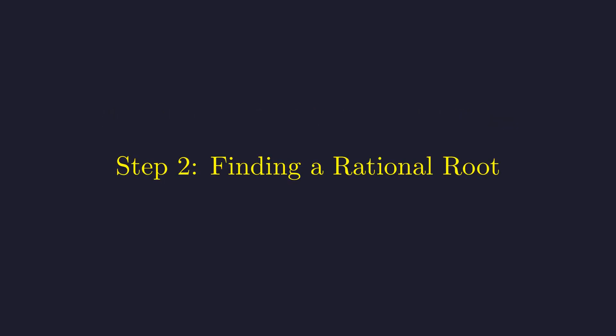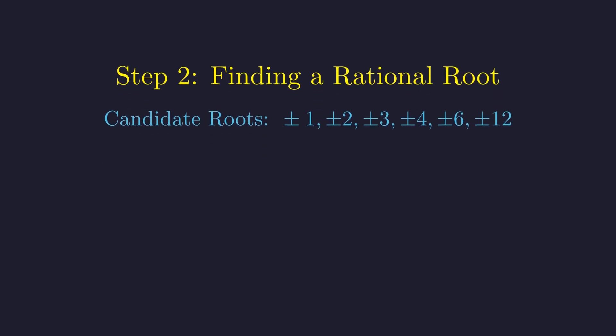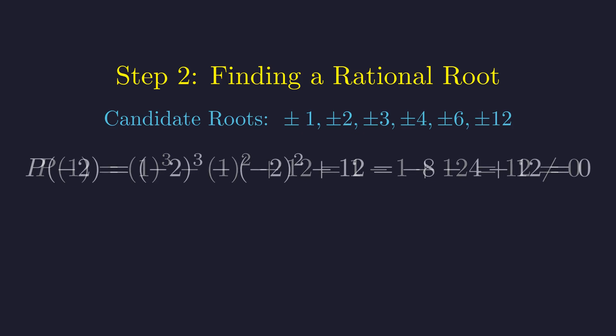We'll use the Rational Root Theorem to search for integer solutions. The theorem tells us that any integer root must be a divisor of the constant term, 12. Let's test these candidates. Let our polynomial be p of x. We'll start with x equals 1: plugging in 1 gives us 12, which is not 0, so 1 is not a root. Next, we test x equals negative 2 — this evaluates to 0. We've found our root, confirming what the graph suggested.